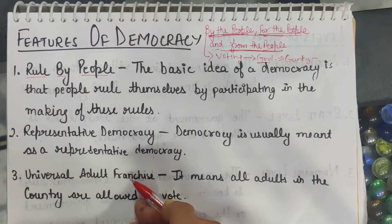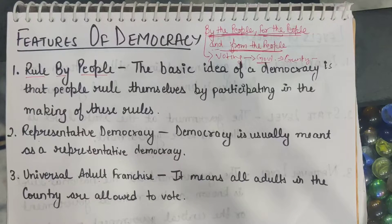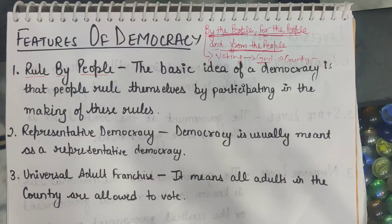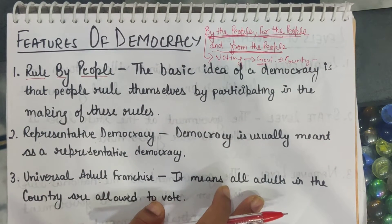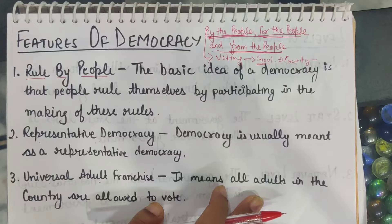The third feature is universal adult franchise. It means all adults in the country are allowed to vote. This is a very essential feature of a democracy. No government can claim itself to be a democratic government without allowing all adults to vote. If adults are not allowed to vote, they are not being given the right or freedom. So if you are following a democratic government, it means you are also allowing all adults to vote.